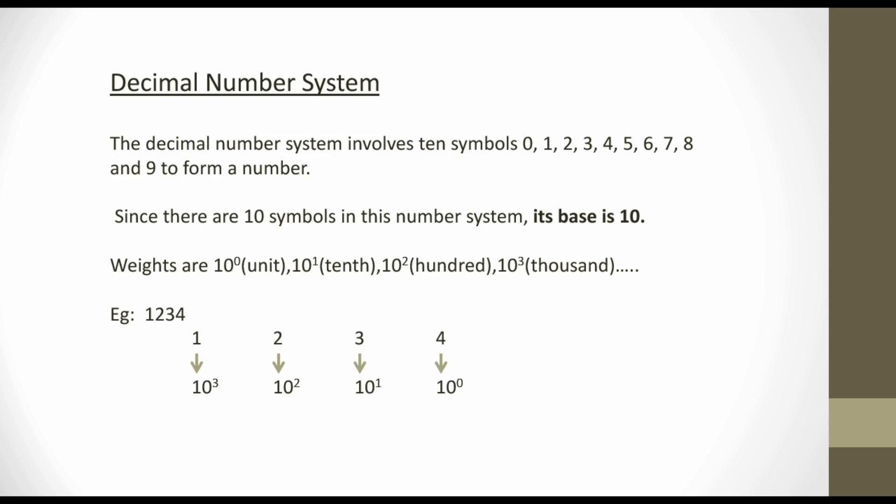For example, here we use four symbols: 1, 2, 3, and 4 — four digits. Symbols are also known as digits. The weight of 4 is 10 raised to 0. The weight of 3 is 10 raised to 1. The weight of 2 is 10 raised to 2. The weight of 1 is 10 raised to 3. Weights start from 10 raised to 0. So: 4 × 10⁰ + 3 × 10¹ + 2 × 10² + 1 × 10³ = 1234.